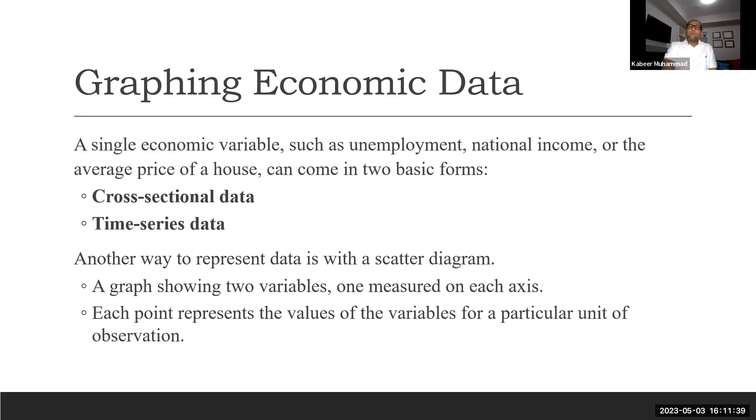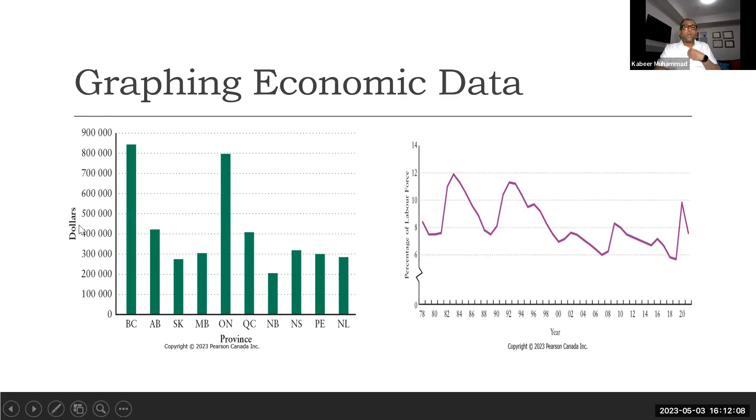In economics, we see graphs based on data. Data can be cross sectional or time series data. Cross sectional data means we are looking at the same variable at the same time period but over different cross sections. For example, this shows the dollar price of housing in Canada in different provinces. It's at a particular time period, we get the data of average housing price in different provinces in Canada, so it's cross sectional data.